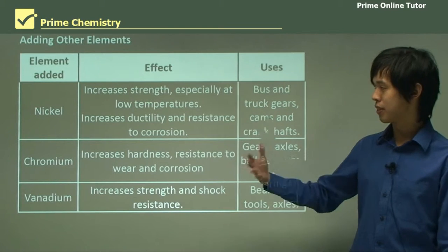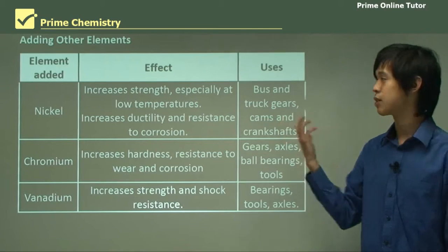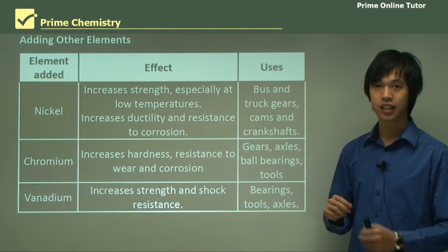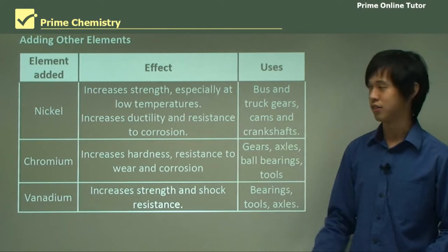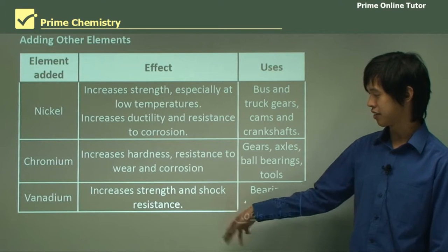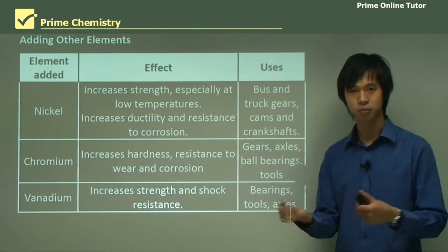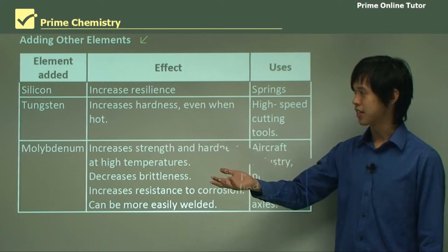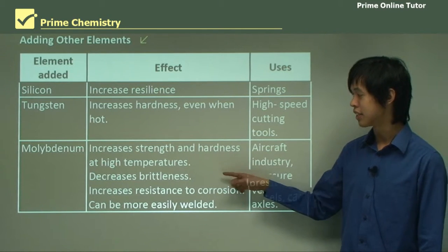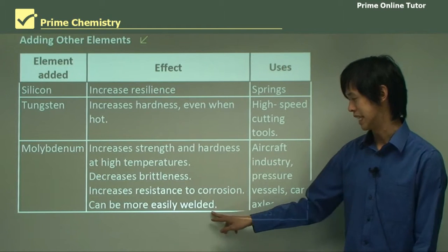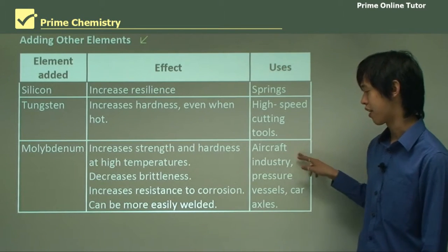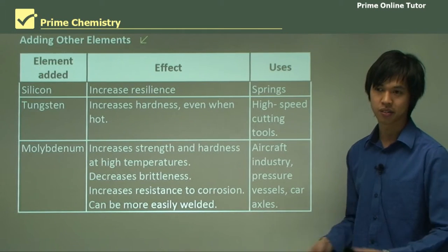Here we have a table of various elements we can add to steel and what they do. Nickel increases strength at low temperatures, ductility, and corrosion resistance. Chromium increases corrosion resistance and hardness. Vanadium increases strength and shock resistance — resistance to sudden applications of force. Silicon increases resilience, tungsten increases hardness particularly in hot applications, and molybdenum increases strength and hardness at high temperatures, decreases brittleness, increases corrosion resistance, and improves weldability. Molybdenum does a lot, but it's expensive, so it's mainly used in the aircraft industry and pressure vessels.